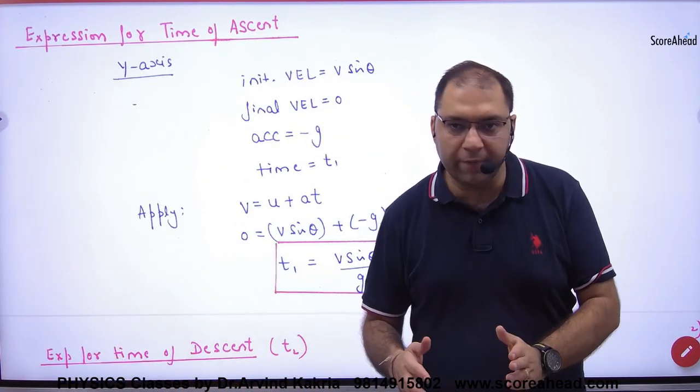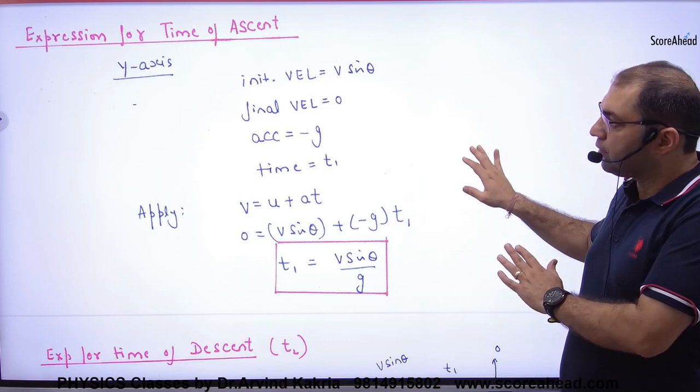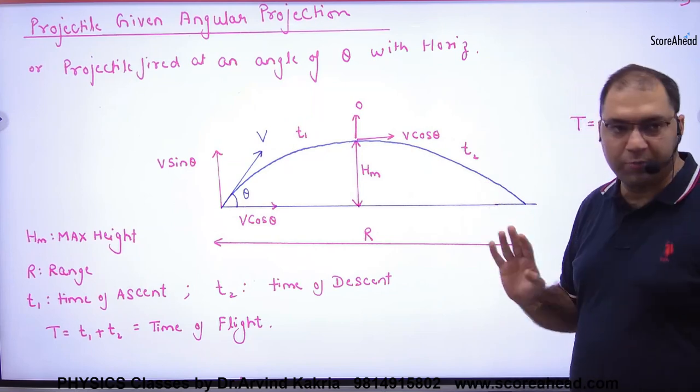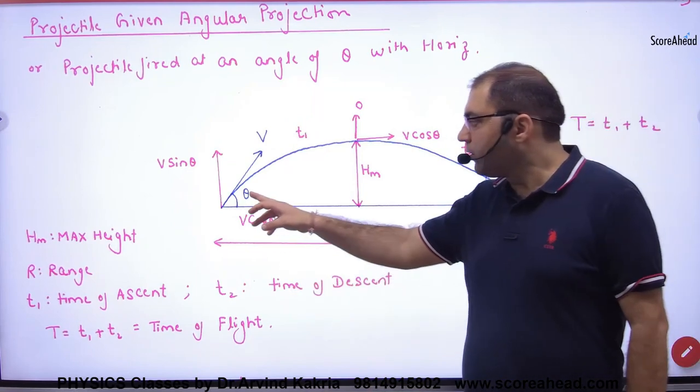Expression for time of ascent: when a projectile is thrown from the ground at an angle, the body is thrown with v velocity.